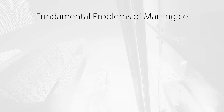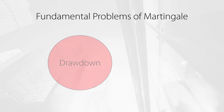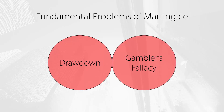There are two fundamental problems associated with using a martingale system as a money management method. The first is drawdown. The second is something called gambler's fallacy, which is the idea that if something happened more frequently in the past, it will happen less frequently in the future in a self-balancing dynamic. The traders who trust the martingale approach also believe that a winning trade is increasingly more likely as the size of a losing streak increases.